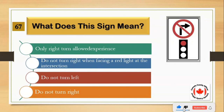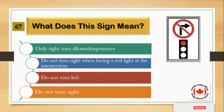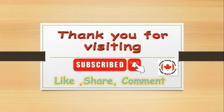What does this sign mean? Number 1: only right turn allowed. Number 2: do not turn right when facing a red light at the intersection. Number 3: do not turn left. Number 4: do not turn right. And the answer is: do not turn right when facing a red light at the intersection.